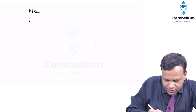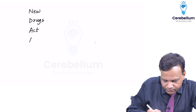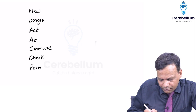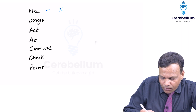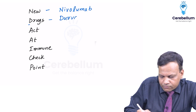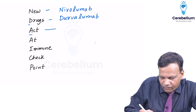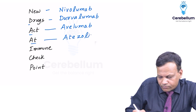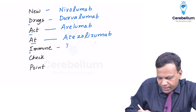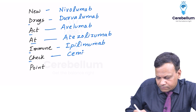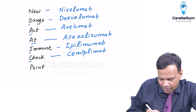Now what are the drugs? Remember the mnemonic: new drugs act at immune checkpoint. N for Nivolumab, D for Durvalumab, A for Avelumab, T for Atezolizumab, I for Ipilimumab, C for Cemiplimab, and P for Pembrolizumab. These are the immune checkpoint inhibitors.